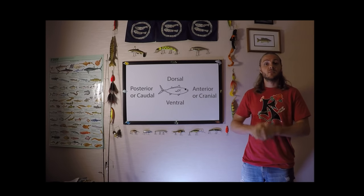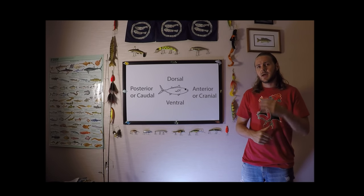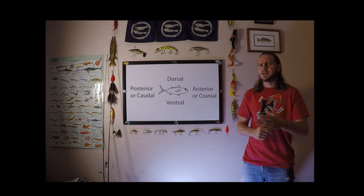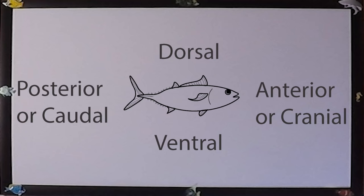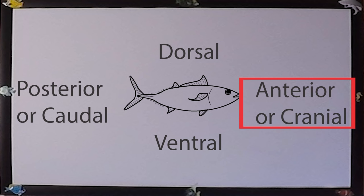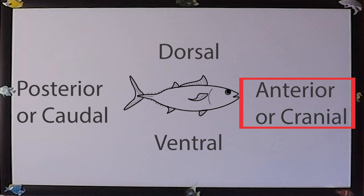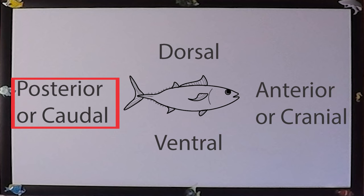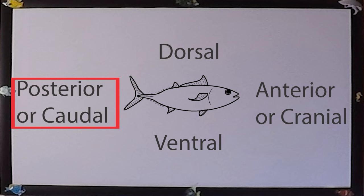First and foremost, we need to go over four directional identifiers and their specific meaning within fishes. The front of the fish, where the head is, is the anterior portion, also known as the cranial region. Opposite of that, near the tail, is the posterior or posterior end, also known as the caudal region.